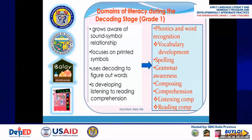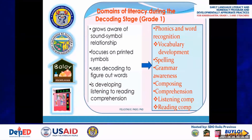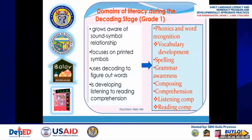Let us proceed to the decoding stage in Grade 1. The characteristics of learners are: they grow aware of sound-symbol relationships — for example, this is letter L and the sound is L — they focus on printed symbols and are excited to read everything in the environment, they use decoding to figure out words, and they are developing listening to reading comprehension. At the decoding stage, learners are expected to be good at phonics and word recognition, vocabulary development, spelling, grammar awareness, composing, and comprehension — which includes listening and reading comprehension.